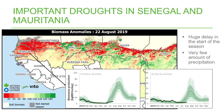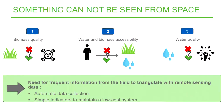Satellite imagery is good — it gives an overview of the region — but some things cannot be seen from space. For example, we cannot know if the biomass is edible by animals or not, whether it's accessible (for instance if there are conflicts), or about water quality. So satellite imagery is not sufficient; we need to build a field data collection system in a simple, low-cost, and easily usable way.